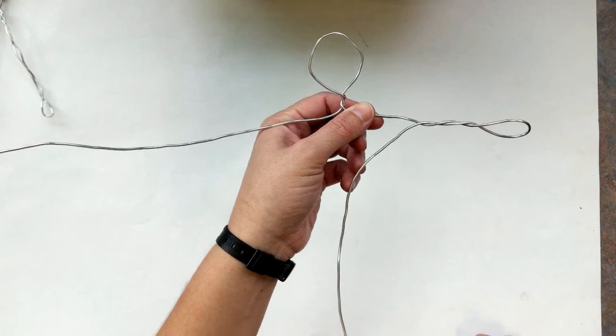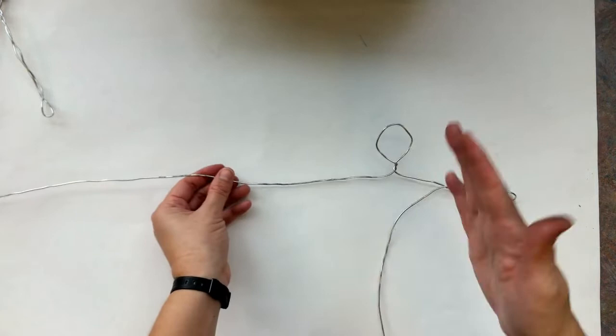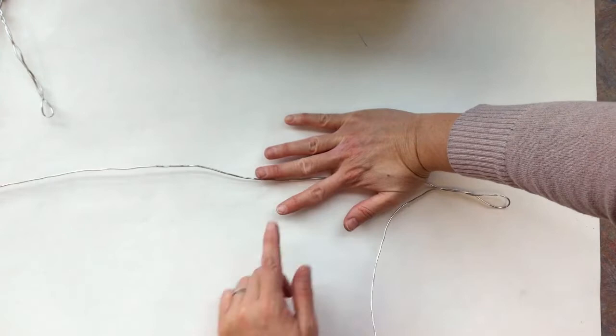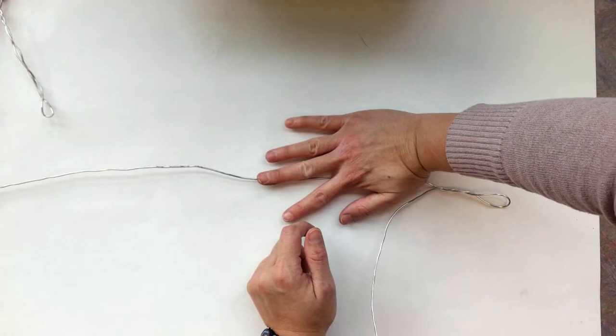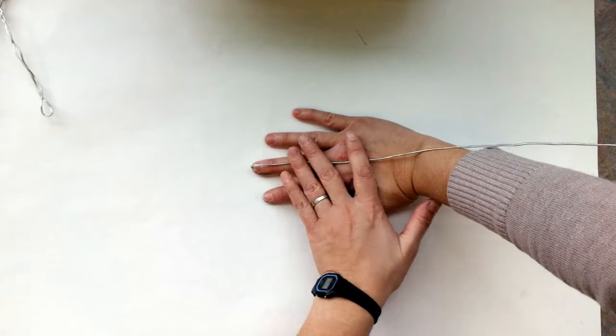I'm going to demonstrate that one more time using the other wire and then we'll do it together as a class. I'm going to take the palm of my hand, squish the face down. My middle finger is going to lay down on top of the wire. I'm going to take this wire and bring it back on top of my middle finger just like this. And then I'm going to slide my hand out.